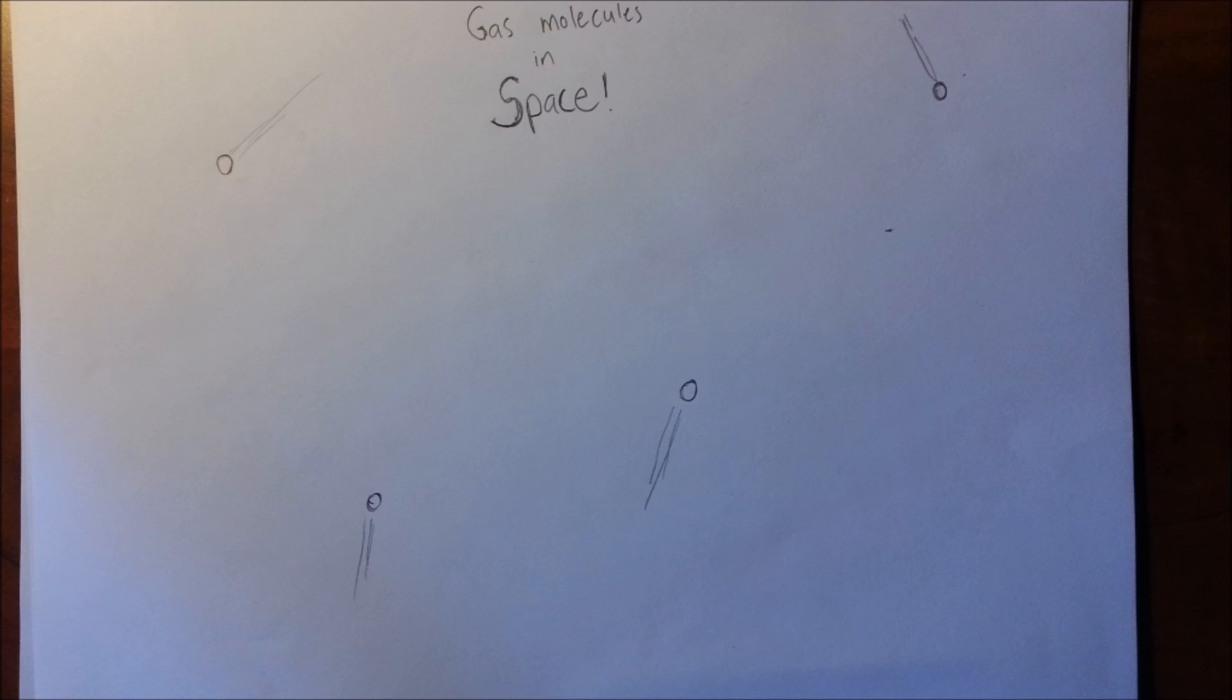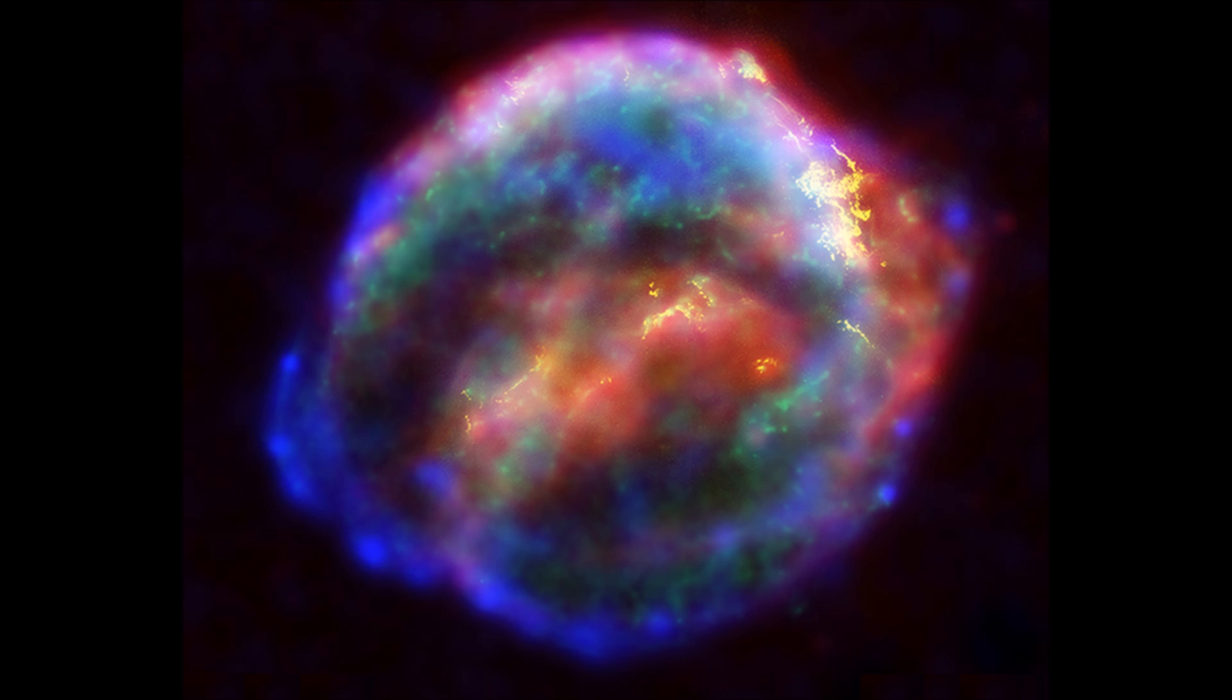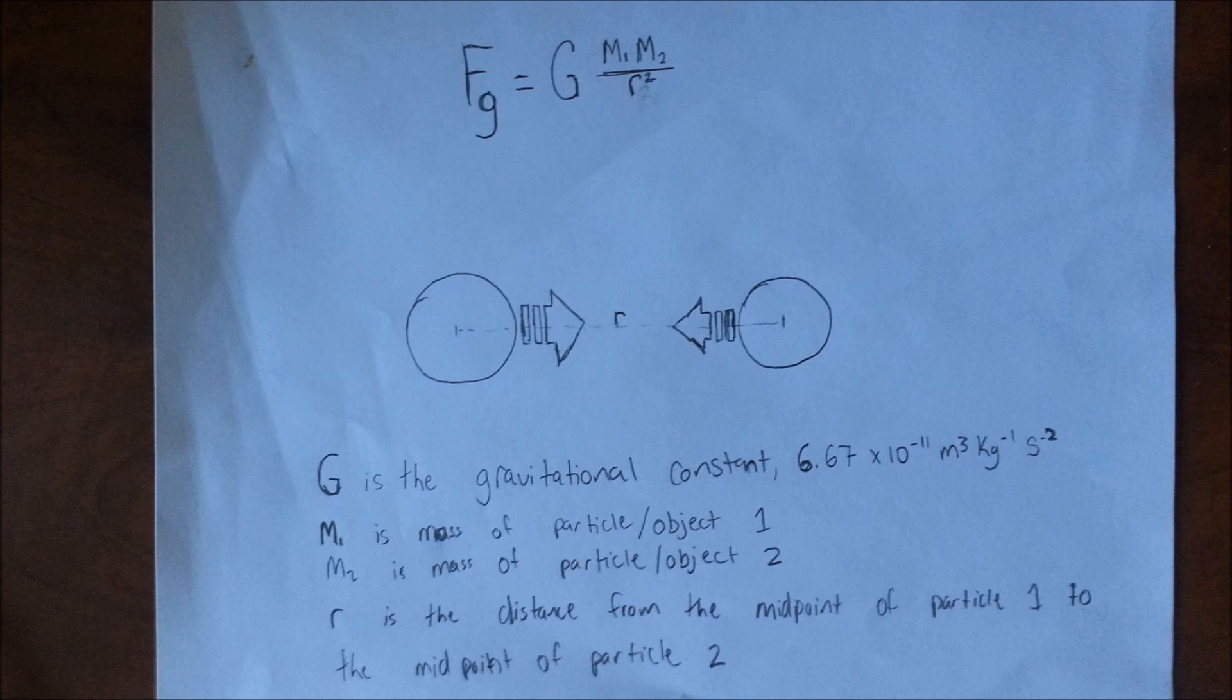This is changed when there are irregularities in the nebula or by the blast of a supernova nearby that causes the molecules to get close enough for them to attract. When this happens, the cloud starts to collapse onto itself.